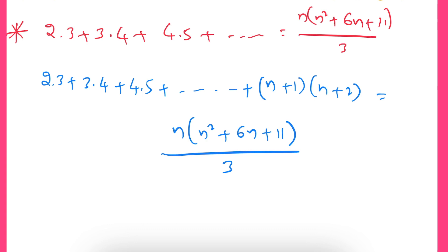The first step is the basis of induction — we show the formula is true for n = 1. The second step is the inductive hypothesis — we assume the formula is true for n = k. The third step is the inductive step — based on the second step we prove the formula is true for k+1 also. Let us go with step 1.